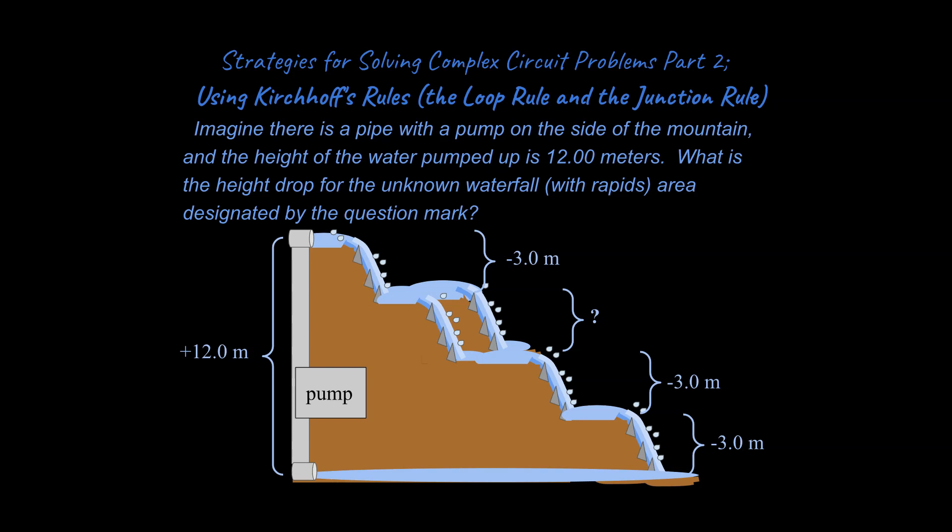All right, for the unknown height drop with this waterfall right here, you're going to have a minus three meters drop, you could say, and it's a good visual representation of the idea that the sum of these numbers should be equal to zero, and that is Kirchhoff's loop rule in an analogous sense. So I'm going to show you how to use that in a circuit problem later on as well.